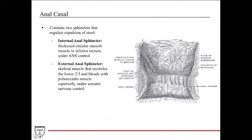The anal canal contains two sphincters that regulate expulsion of stool, similar to the urethra. The internal anal sphincter is circular smooth muscle in the inferior rectum and is under ANS control — we do not consciously control this. The external anal sphincter is skeletal muscle, encircles the lower two-thirds, blends with the puborectalis muscle, and is under somatic control, allowing us to consciously choose when to have a bowel movement.